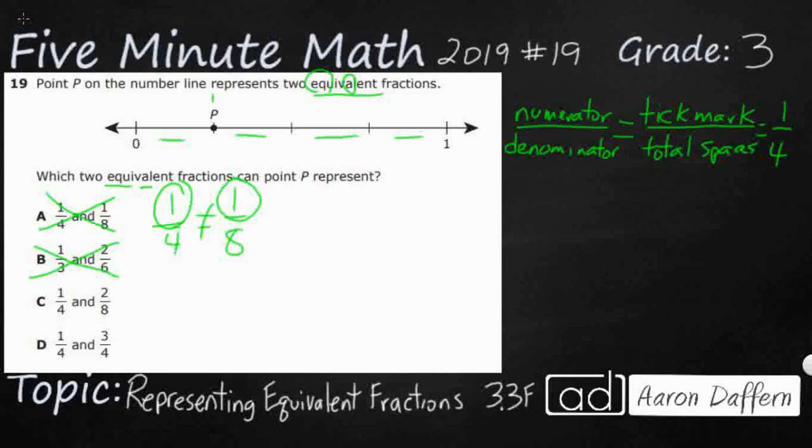So we have used our reasoning to go ahead and get rid of two answer selections, A and B. Now we're stuck with C and D. So one fourth, does it equal two eighths or three fourths? Let me show you a few different ways we can solve this.